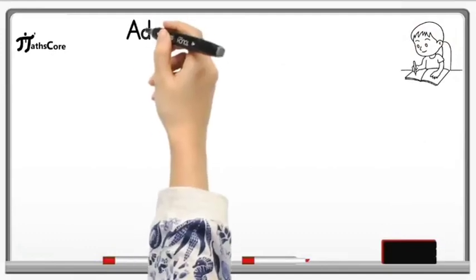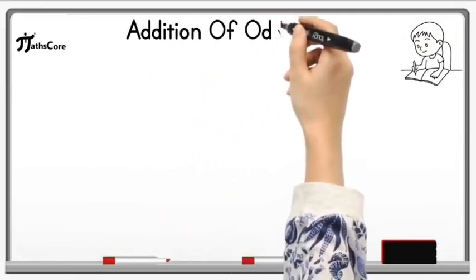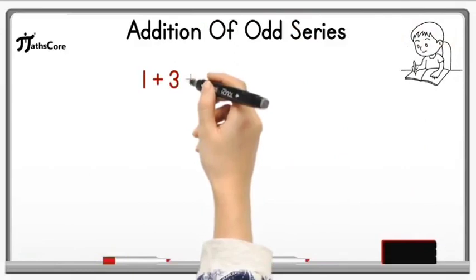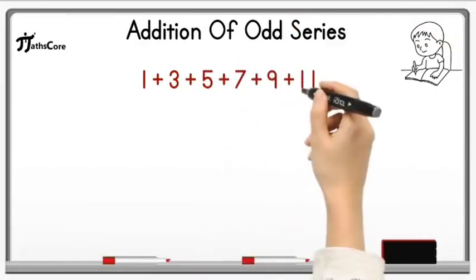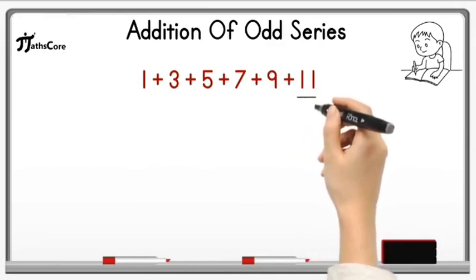Let's learn about Vedic Math technique for addition of odd series. Here I have taken example of odd series 1 plus 3 plus 5 plus 7 plus 9 plus 11. In this odd series we have to focus on last number 11.